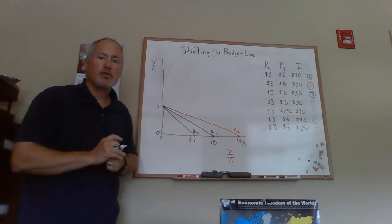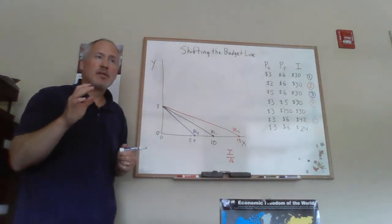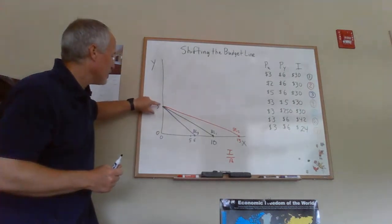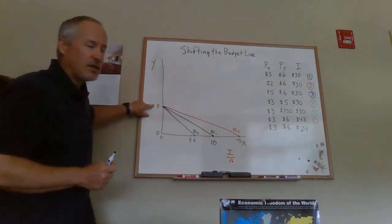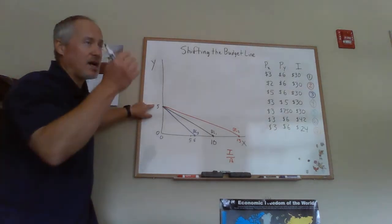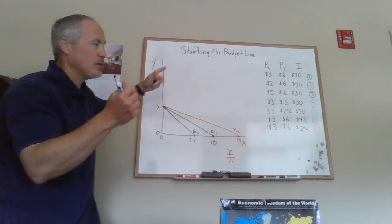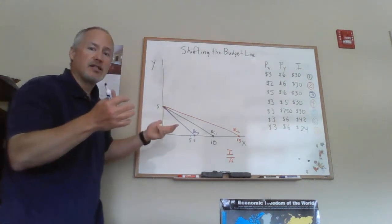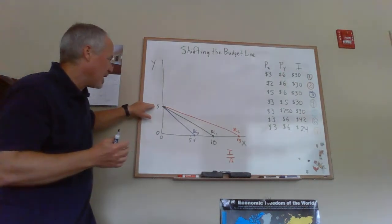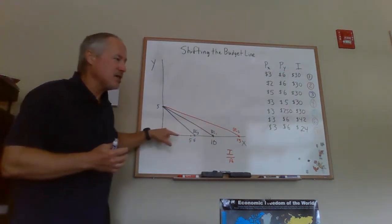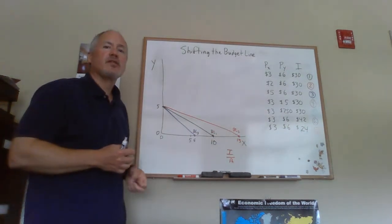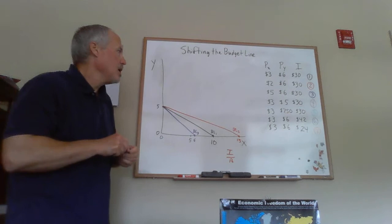The first three budget lines we've drawn show what happens as the price of X changes. So as the price of X changes, the budget line pivots. It's anchored here on the Y axis because the Y intercept is I divided by the price of Y. When the price of Y is not changing and I is not changing, if the only thing that's changing is the price of X, this intercept is anchored and the budget line is pivoting. It moves out when the price of X falls and it moves in when the price of X goes up.